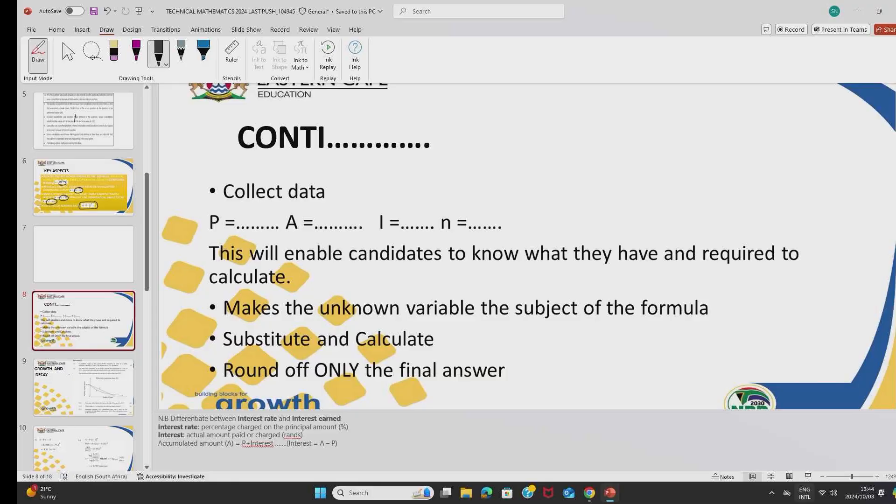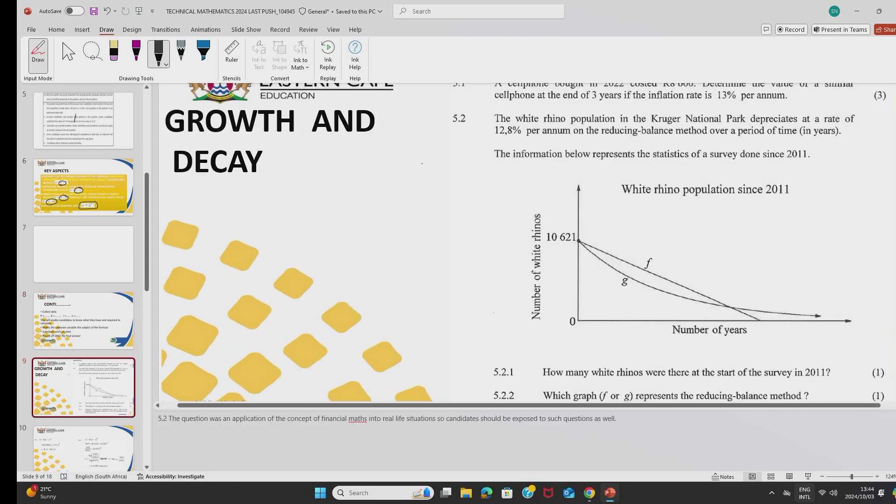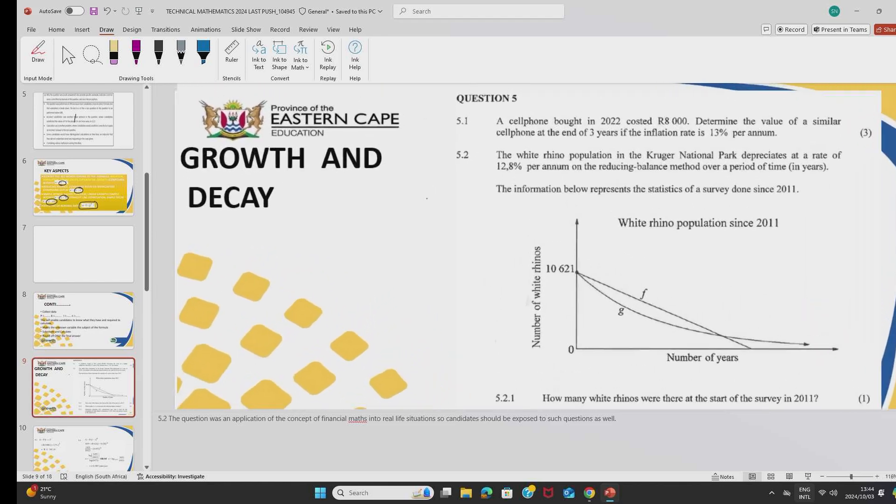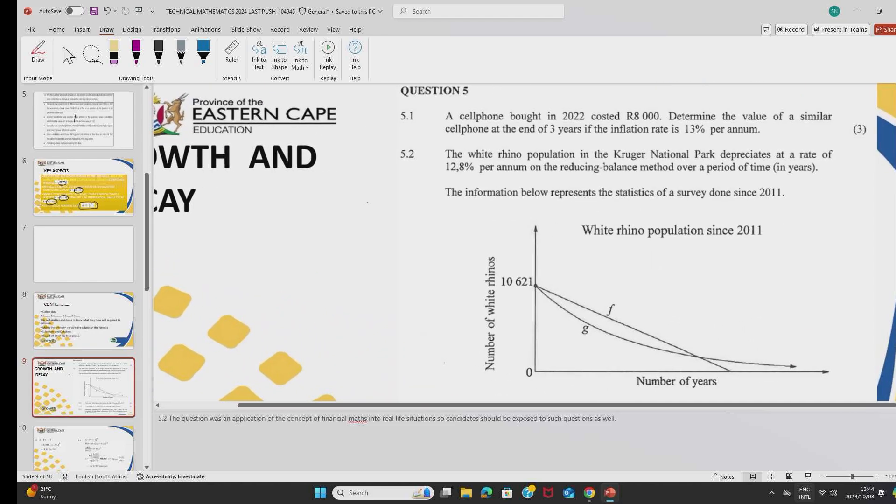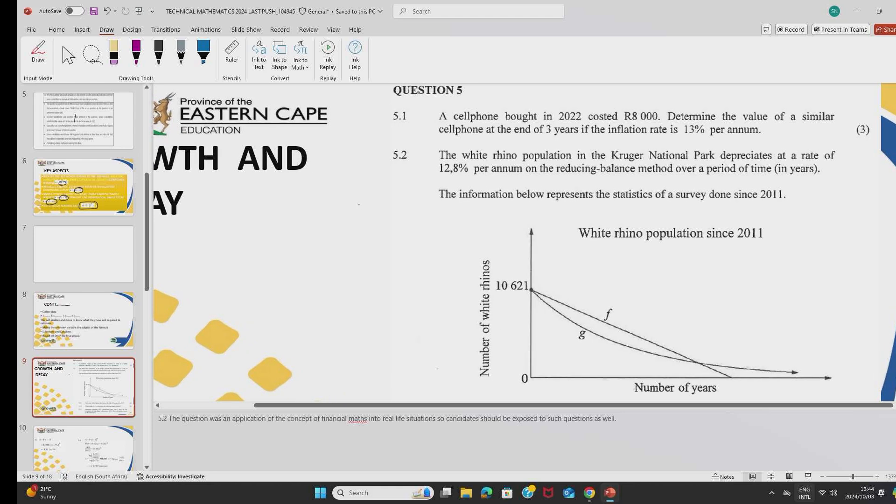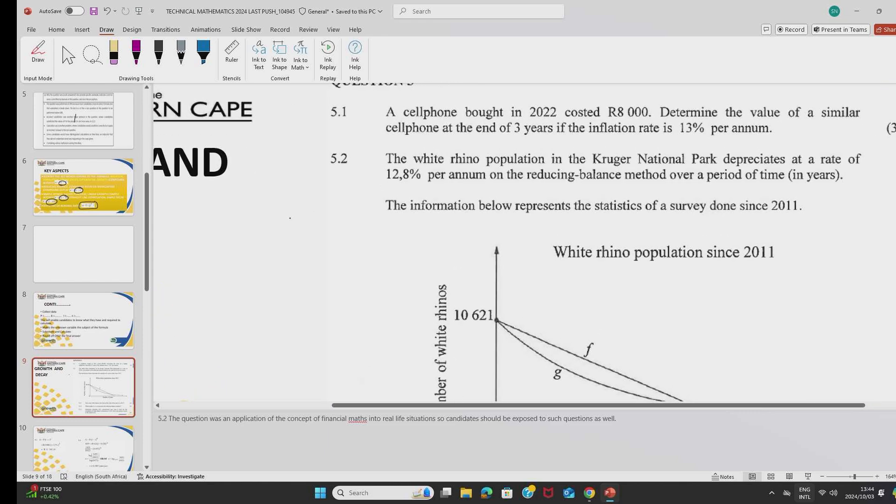I will take you through these demonstration steps by taking one problem and run with it with you. We have a question there that says, a cell phone bought in 2022 costed 8,000 rands. Determine the value of a similar cell phone at the end of three years if inflation rate is 13% per annum. In each statement, you are interested not in the language, but you are interested in the key term that will lead you into the correct formula.